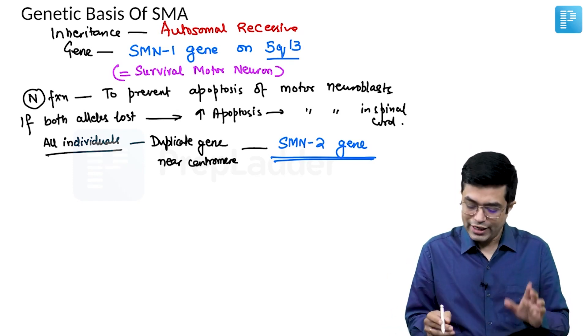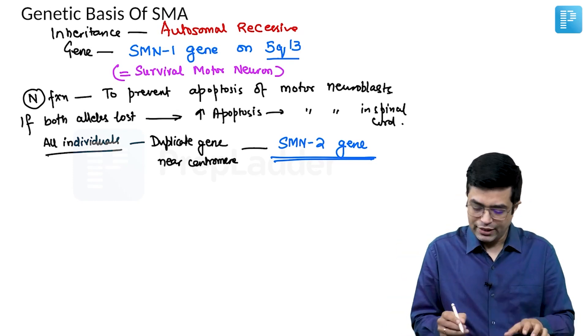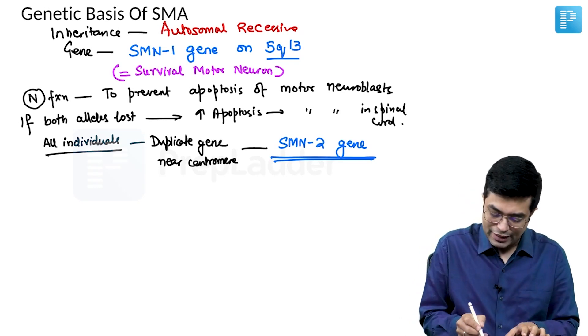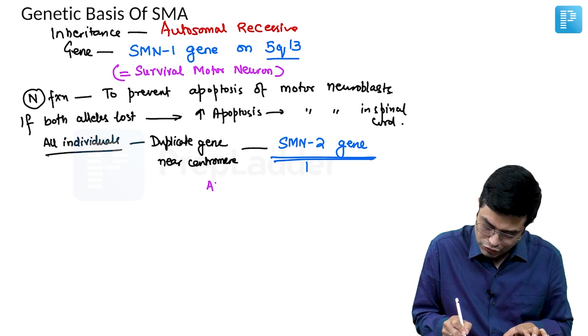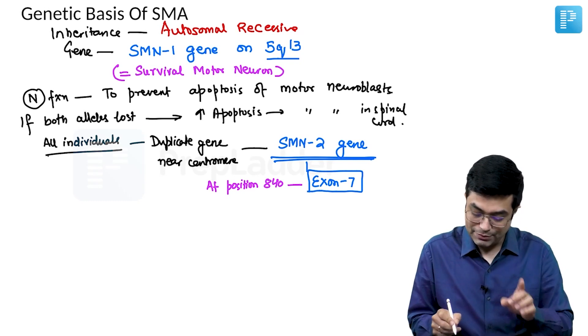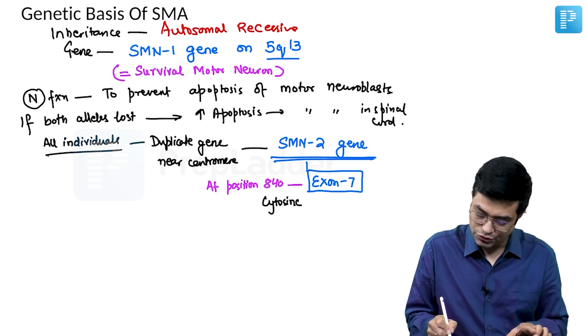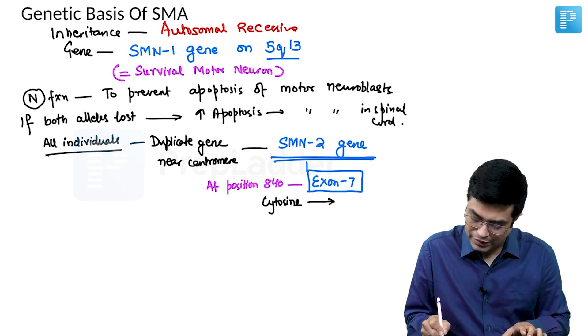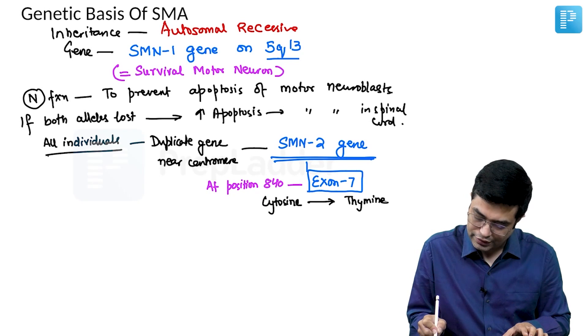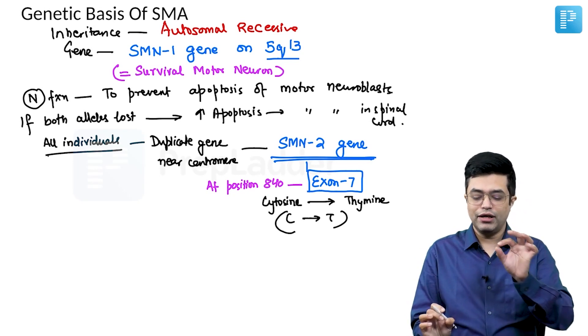What is the difference between SMN1 and SMN2? SMN2 gene is usually a relatively less functional gene. The difference between SMN1 and SMN2 is at position 840 there is an exon called exon 7. In this exon 7, normally in SMN1 there is a cytosine residue which is present. This cytosine residue is converted, it is changed, it has been replaced by thiamine. This C to T conversion is the only difference between SMN1 and SMN2.